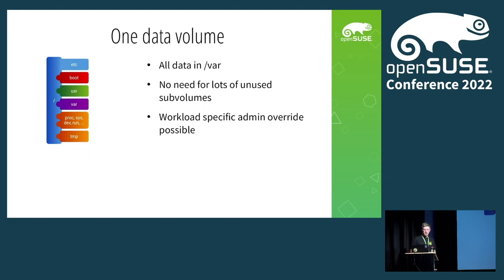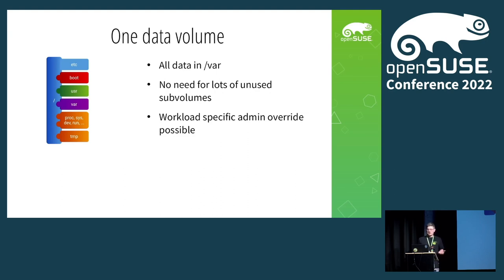To simplify the diagram further, we could also get rid of all those separate data subvolumes and say all data goes into /var. This actually came to mind when I was looking at a Raspberry Pi — I found all those BtrFS subvolumes on my SUSE installation and thought: why do I need /usr/local, /srv, and /opt? There's nothing installed there. So just get rid of all that, put it in /var, and we end up with a system that has four volumes: one for config, one for boot, one for the OS, and one for data. Much simpler.